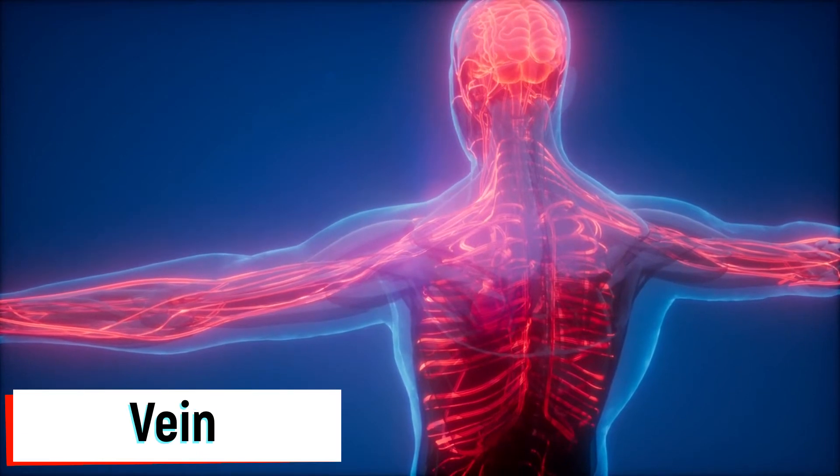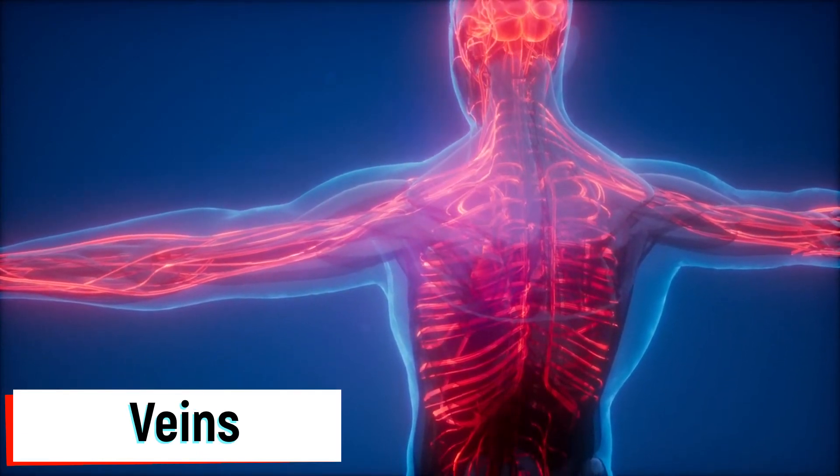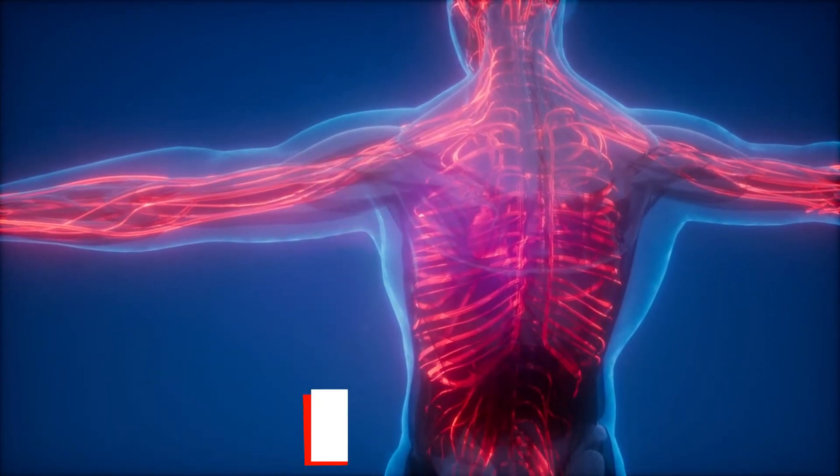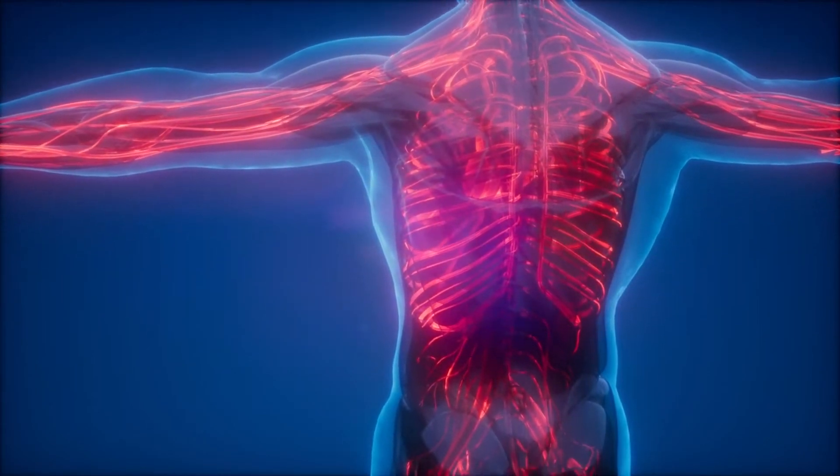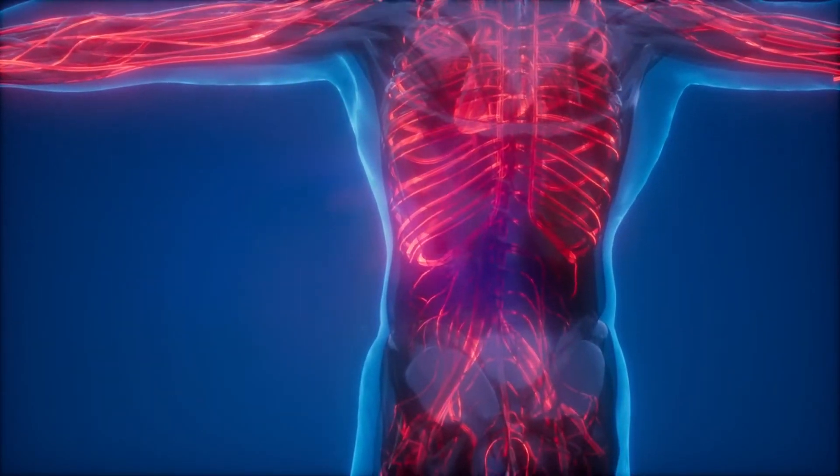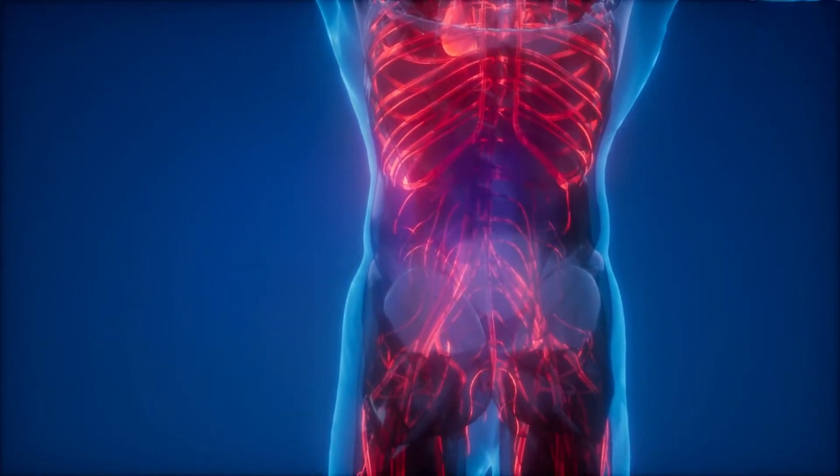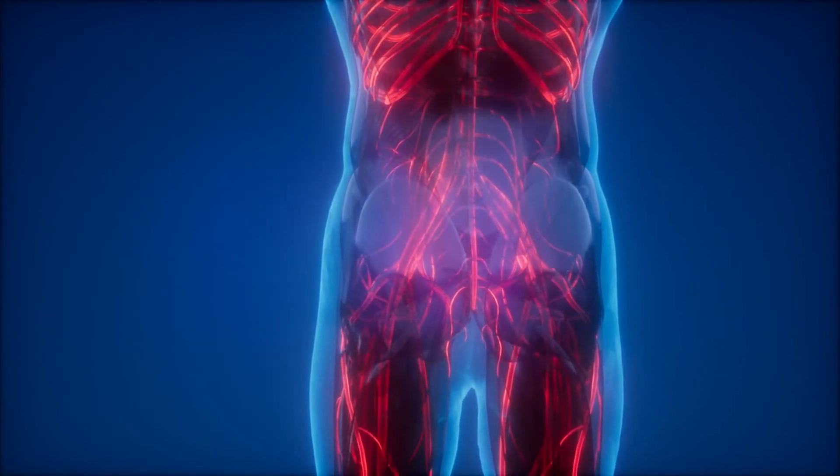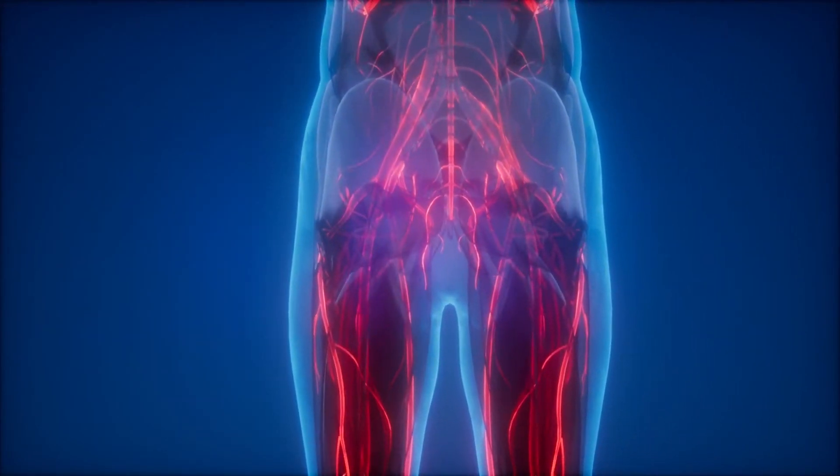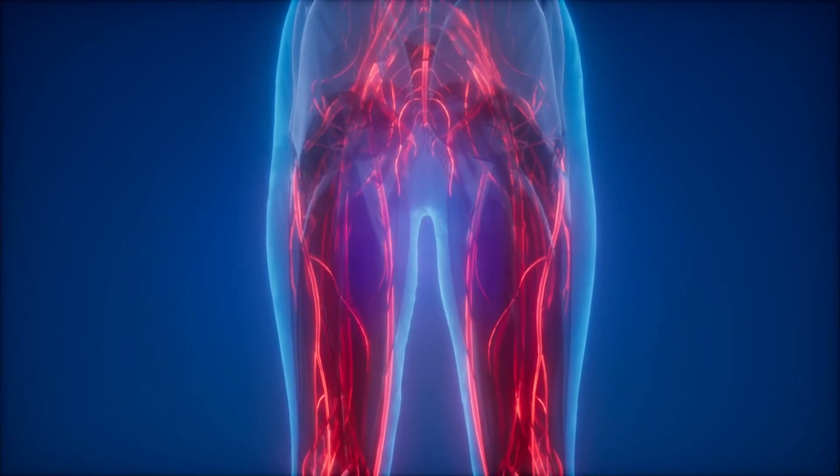Veins bring blood that is low in oxygen from the body back to the heart. They are thinner than arteries. Veins have valves which prevent the blood from flowing backwards. The main veins in the human body are the superior vena cava and the inferior vena cava.